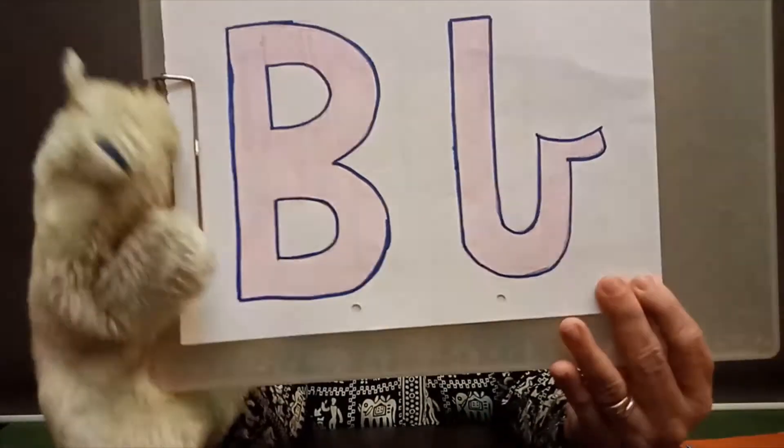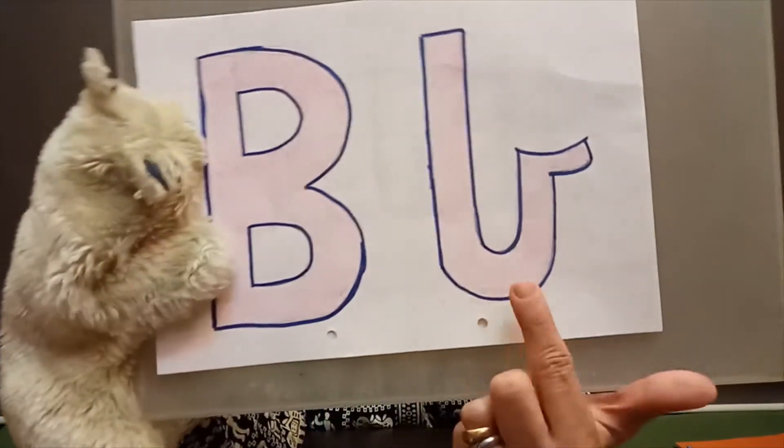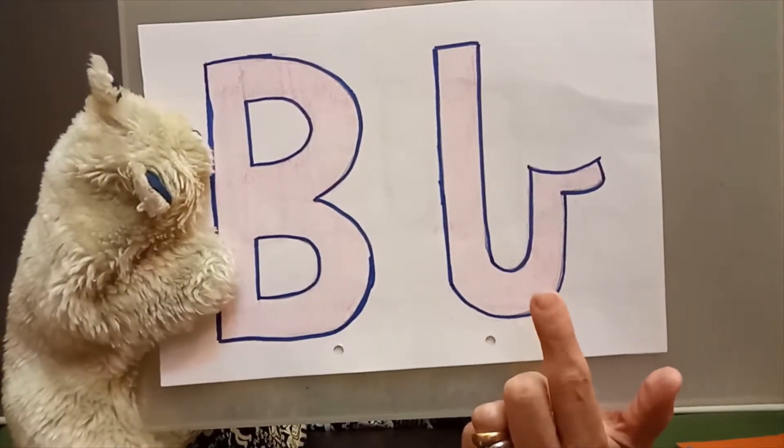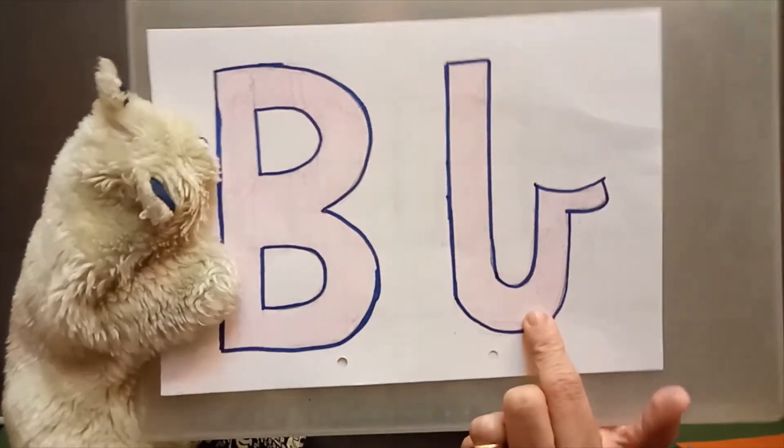B says B, B, book. And B says B, B, bottle. Very good. Now, see, we learned how to write capital B. All of you know how to write capital B. Today, we are going to learn how to write small b.